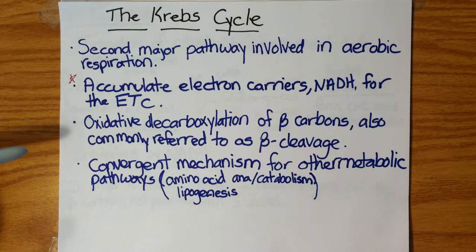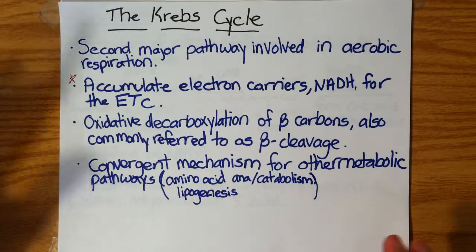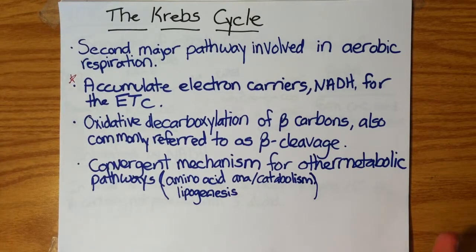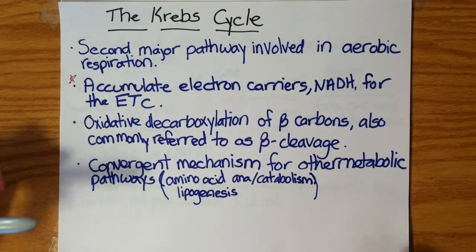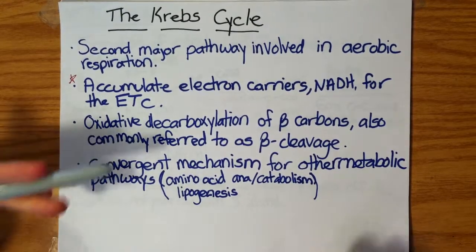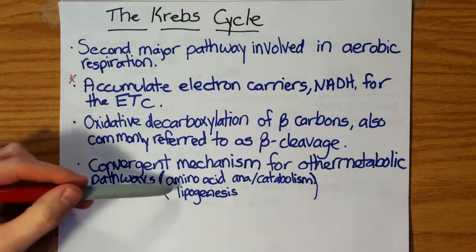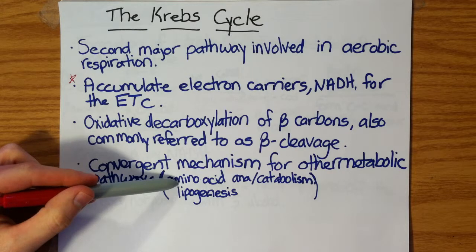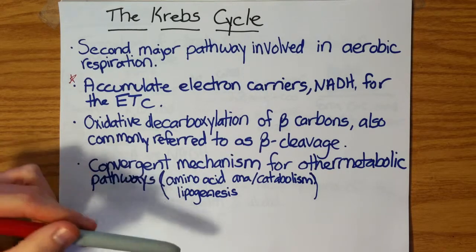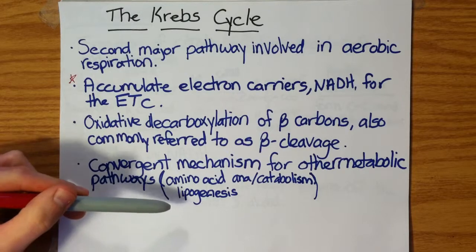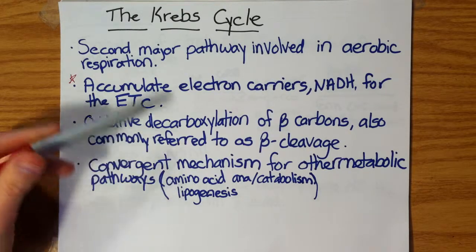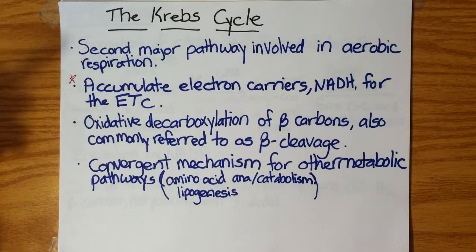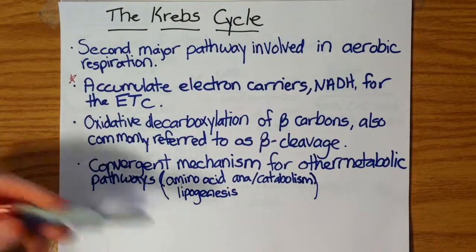Another important fact of the Krebs cycle is that it's a convergent cycle — a mechanism where other metabolites from various other metabolic pathways can feed into the Krebs cycle if glucose is insufficiently supplying the cycle. You can supply the cycle through amino acids or even lipids. Amino acids feed in through an intermediate of the Krebs cycle, and lipids are broken down and converted into acetyl-CoA, which is fed into this Krebs cycle.